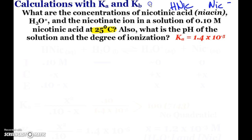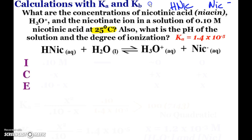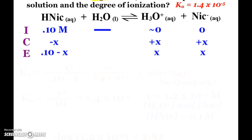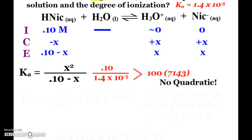Nicotinic acid, H-nic, plus water makes our hydronium and the nicotinate ion. We are set up for an ice table. And so at equilibrium, 0.1 minus X for nicotinic acid, XX for hydronium and nicotinate. So when we look at our Ka expression, it looks like we're going to have to do quadratic. But my original concentration, 0.1 molar divided by the Ka is greater than 100. It's 7,143. That means we don't have to do the quadratic.